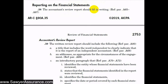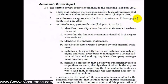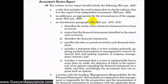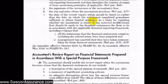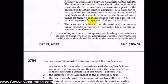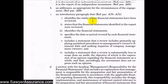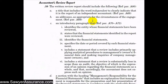The review report should be in writing and include the following statements. There needs to be a title that includes the word 'independent,' so it might say something like 'Independent Accountants' Review Report.' We need to address it to someone at the entity that we reviewed.